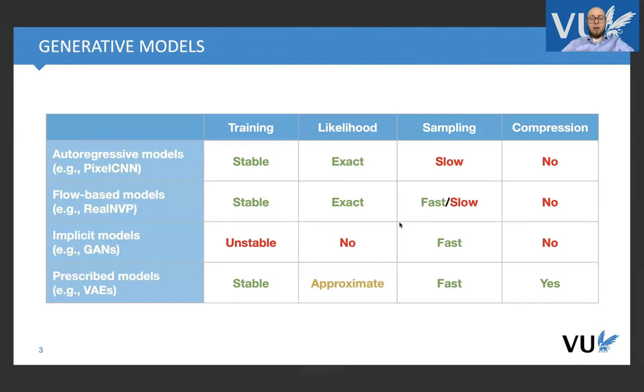The general overview of these models or classes of models: we see that last time we talked about prescribed models, so they are good at training, training is stable, we can approximate likelihood, we can quickly sample from these models, and we can also use them for compression.